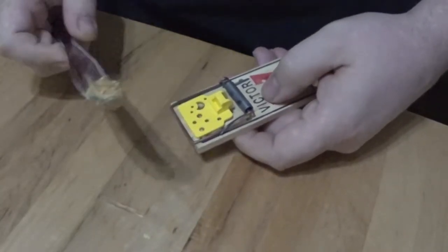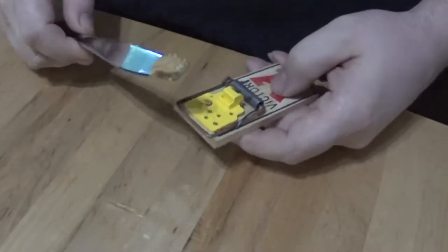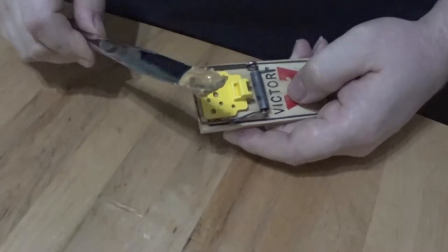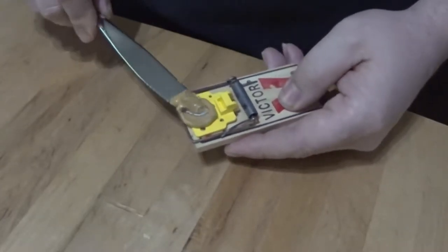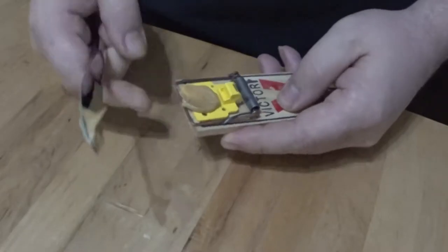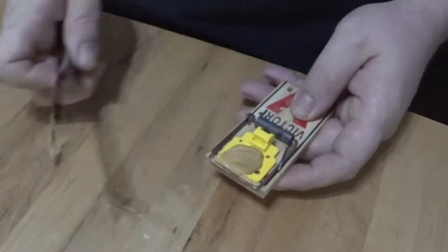Peanut butter is the best bait. It's sticky, it's smelly, they can't resist it. Makes it to where they have to get in there and chew on it to get to it. Best thing to do is just smear a little bit right on the end like that. Get it on that little tang there.